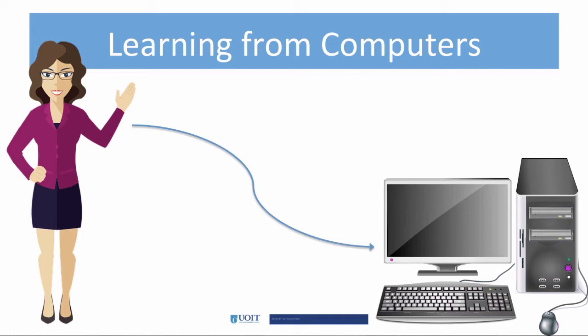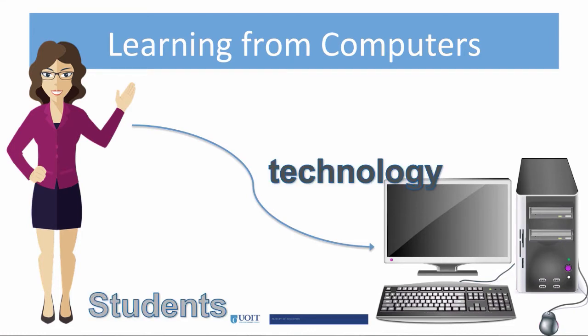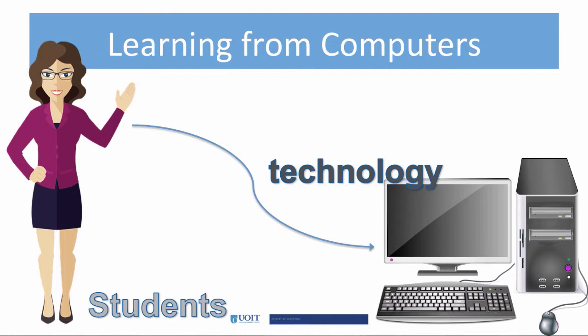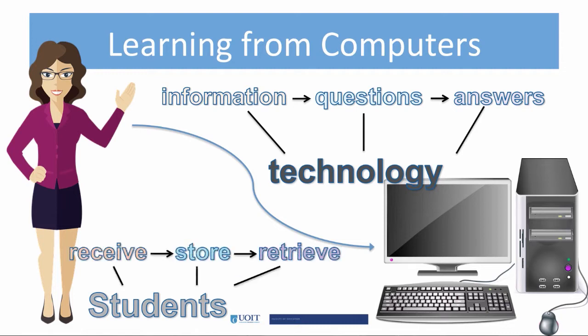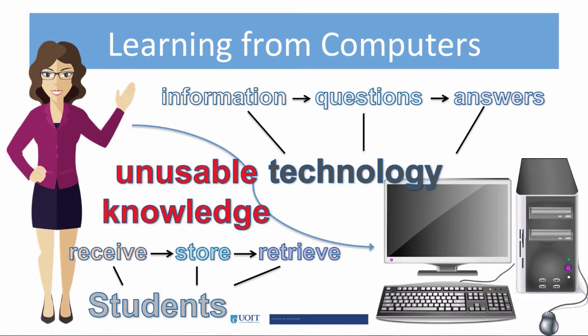Yonenson says when students learn from technology — such as watching an instructional video or interacting with computer-assisted instruction — both the technology and the learners assume roles that can better be fulfilled by the other. Technologies present information as questions and judge answers, all of which humans do better. While humans receive, store, and retrieve information, all of which computers do better. What results in learners is inert, unusable knowledge.